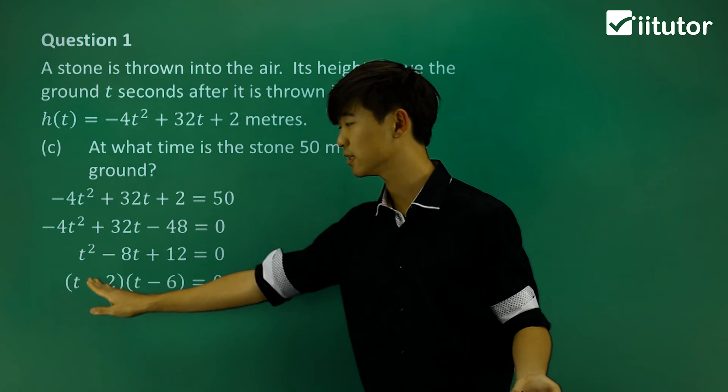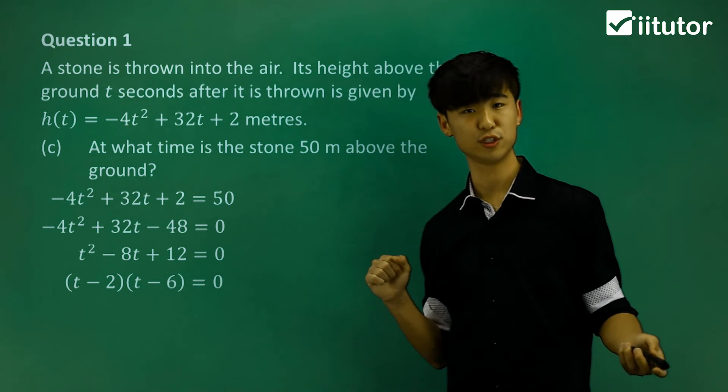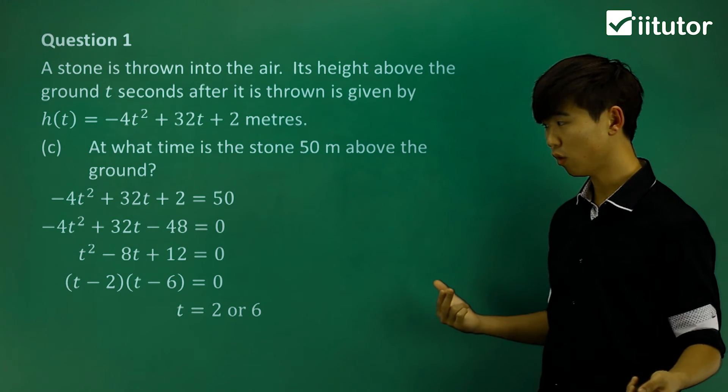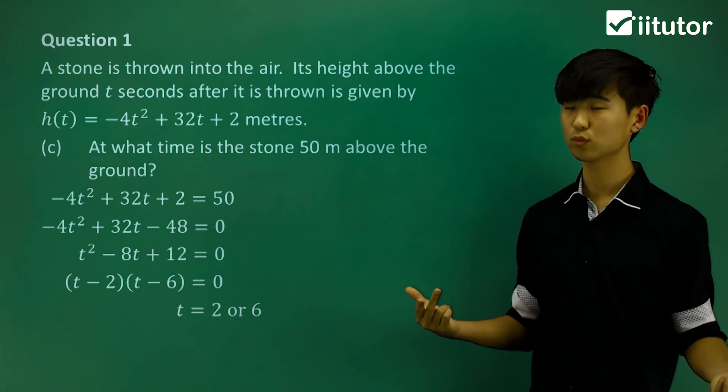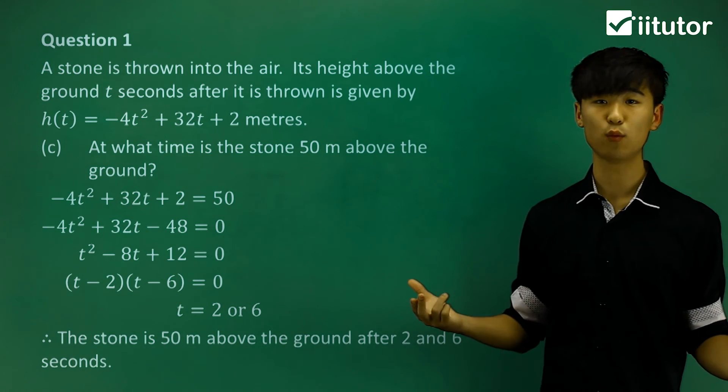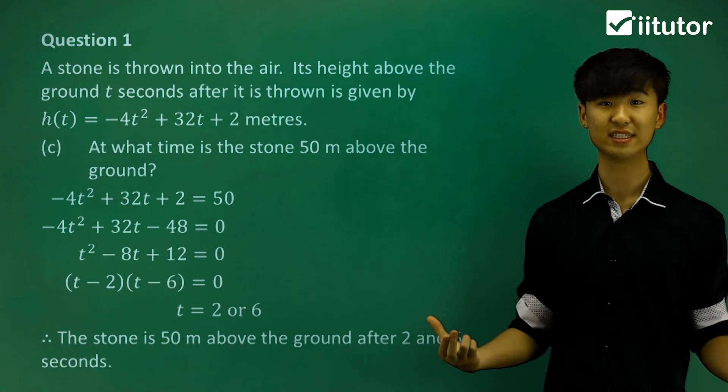(t - 2)(t - 6) = 0. This means either bracket equals 0, so t = 2 or t = 6. The stone is 50 meters above the ground after 2 seconds and after 6 seconds.